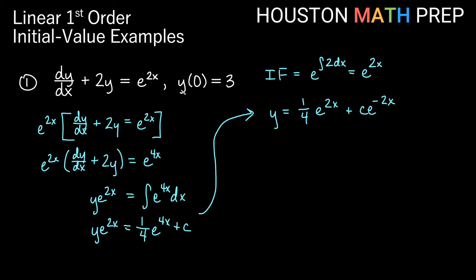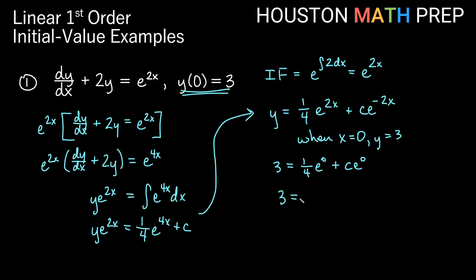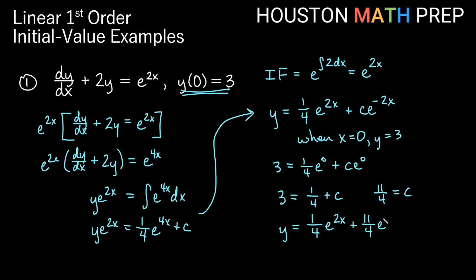Dividing e to the 4x by e to the 2x gives e to the 2x, and c divided by e to the 2x becomes c e to the negative 2x. Now that we have our general solution, let's find our particular solution using y of 0 equals 3. Plugging in: 3 equals one fourth e to the 0 plus c e to the 0, and since e to the 0 is 1, we get 3 equals one fourth plus c. Getting a common denominator gives c equals 11 over 4. So our particular solution is y equals one fourth e to the 2x plus eleven fourths e to the negative 2x.